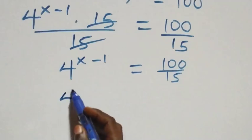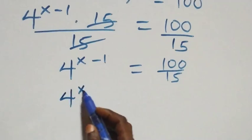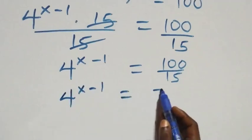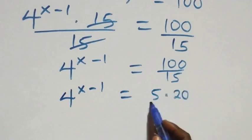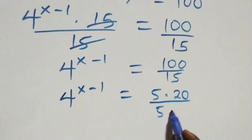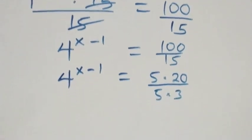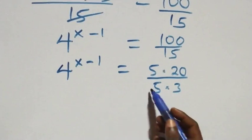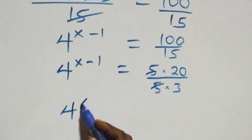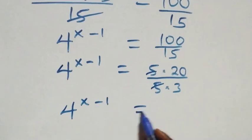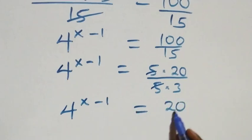We can write this as 4 raised to power x minus 1 equals 5 times 20 over 5 times 3. The 5s cancel each other, and what we have becomes 4 raised to power x minus 1 equals 20 over 3.